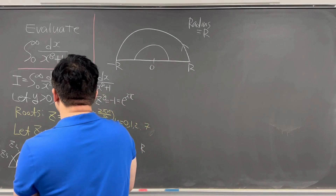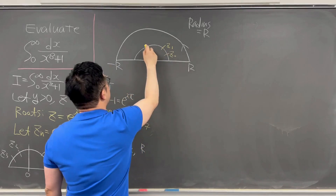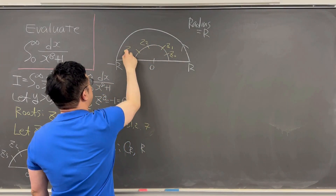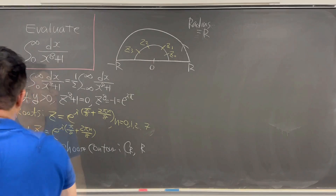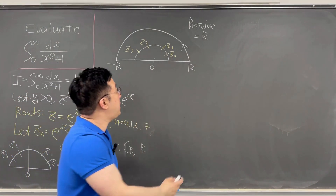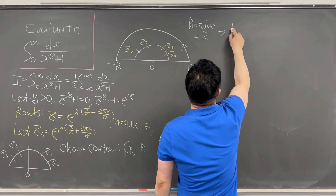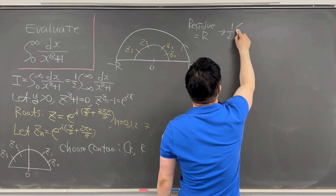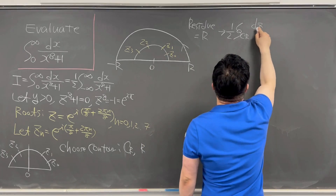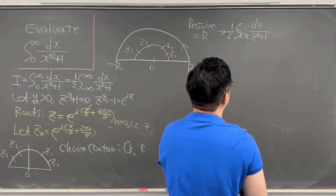Using this contour, we have poles at z0, z1, z2, and z3 located in the upper half-plane. We go back to our integral and consider one-half times the contour integral of dz over z⁸+1.